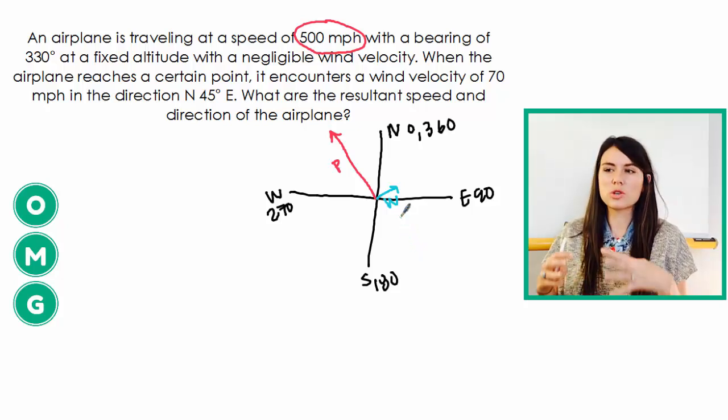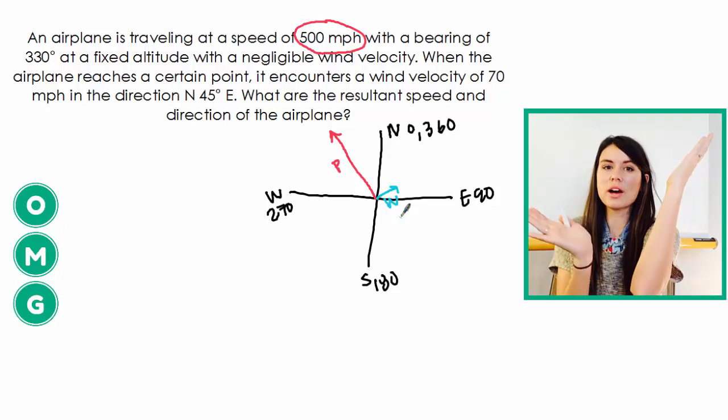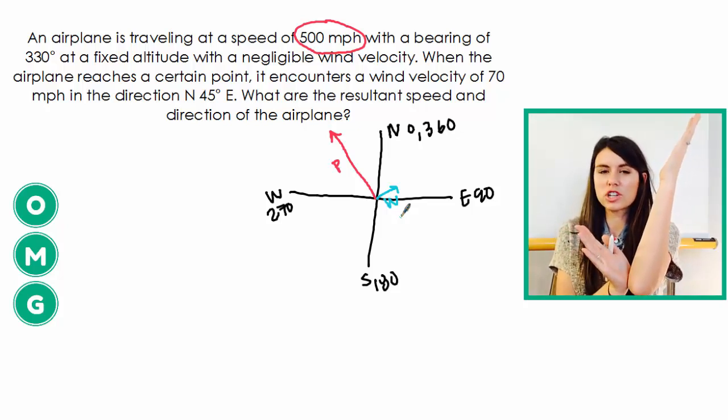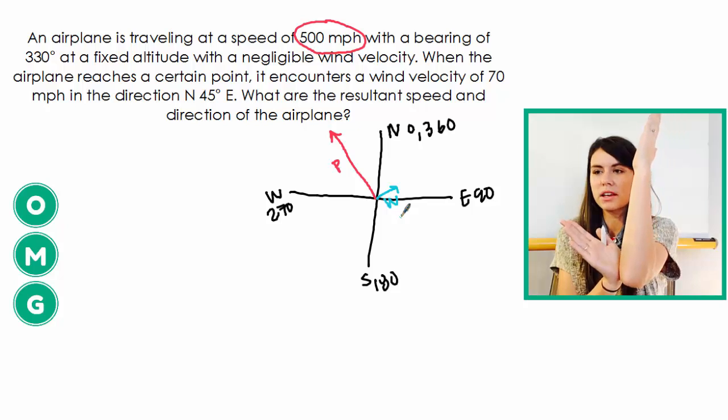Now the cool thing is you have an airplane and you have wind. So if we think about that, if the airplane is traveling in this direction and the wind is traveling in this direction, that wind is going to pull that airplane up a little bit. So it's going to be a little bit more vertical.